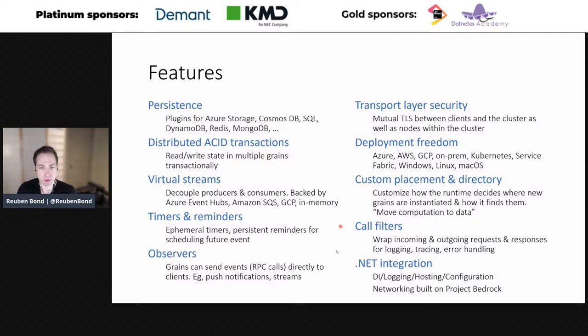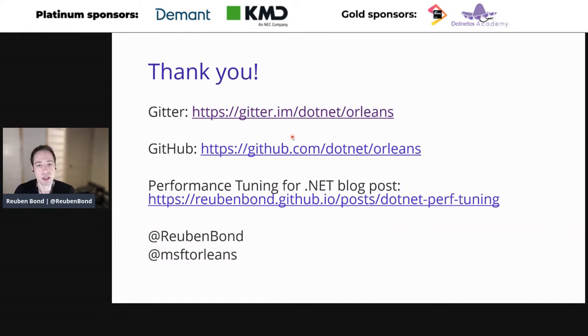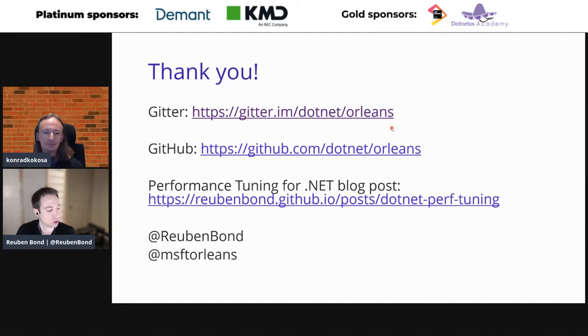Orleans is feature-rich, though we didn't cover all the features today. There are good samples at aka.ms/orleans-samples showing how to build realistic apps, deploy to Kubernetes, etc. Spectre is an awesome client library. There's a very active Gitter community where you can ask questions, plus GitHub and the blog post referenced earlier.